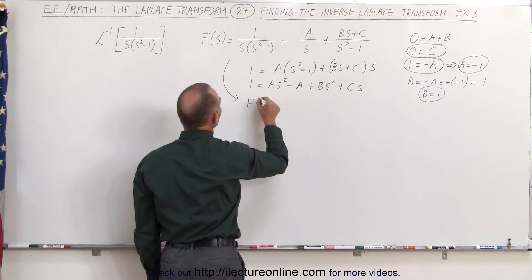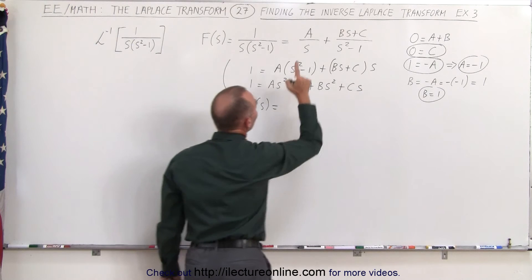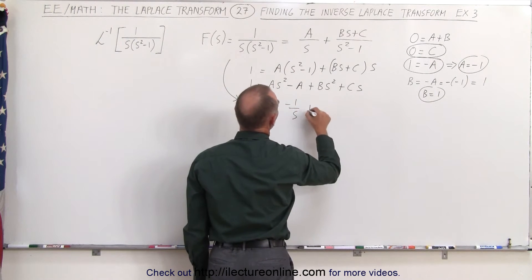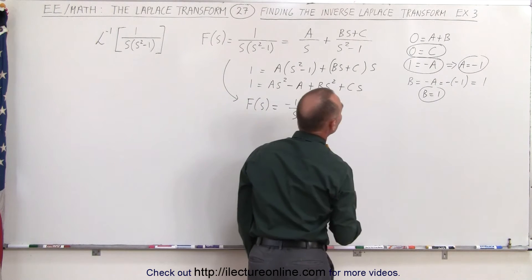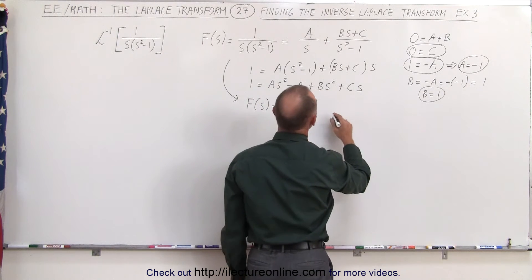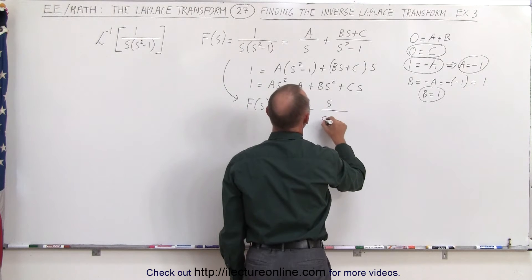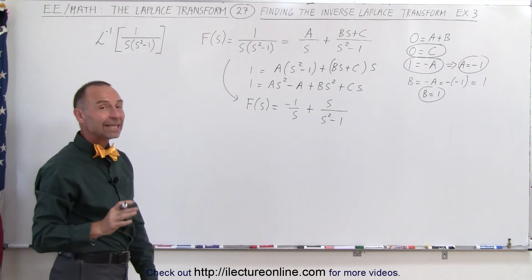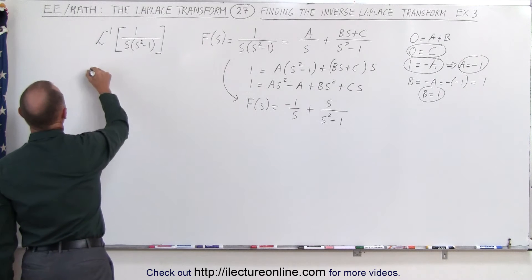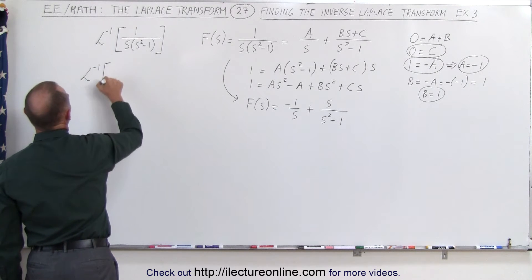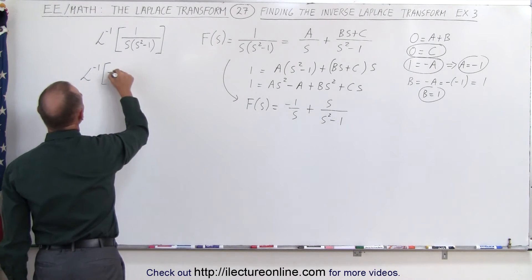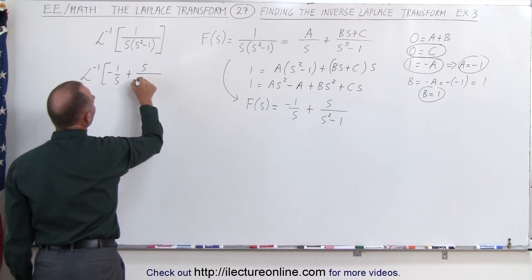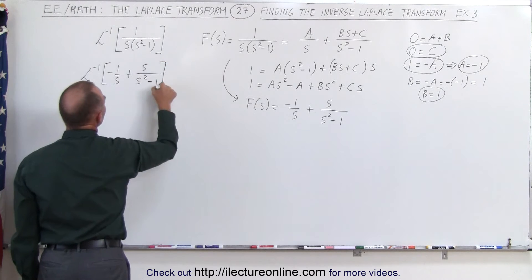Now we can rewrite f(s) with the values we found. With a equal to minus 1, b equal to 1, and c equal to 0, this becomes minus 1 over s, plus s over s squared minus 1. Now we're going to take the inverse Laplace transform of minus 1 over s plus s divided by s squared minus 1.